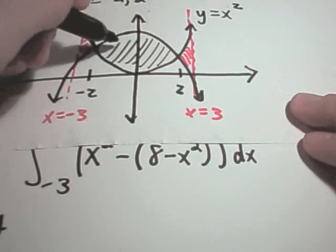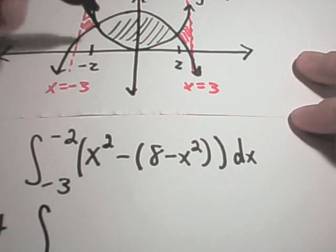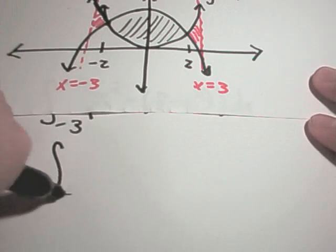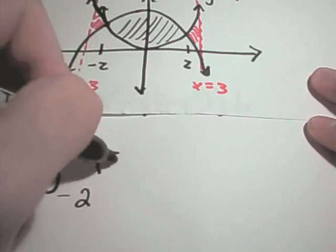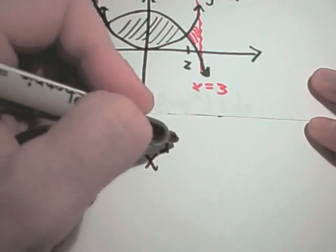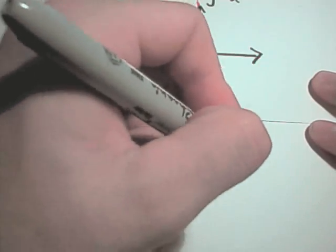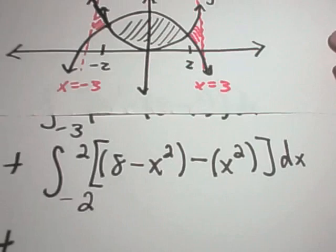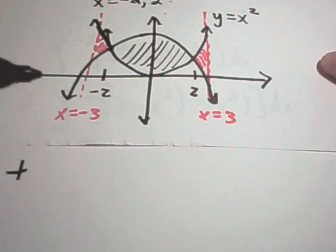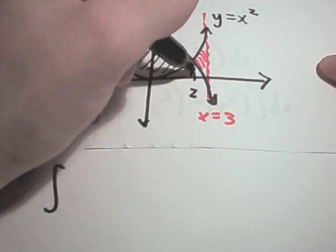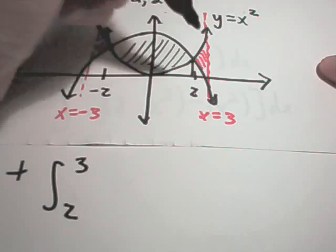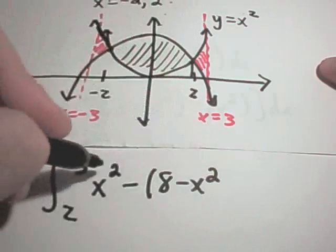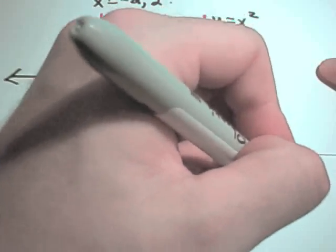So that's going to give us the first little region. We're going to have to add to that the area in the middle. And the area in the middle, well, the limits of integration are going to be from negative 2 to positive 2. So from negative 2 to positive 2. Again, now the curve on top is different. The bigger one is the 8 minus x squared curve. We'll subtract away the bottom curve, which is x squared. And then the last thing we'll have to do is add on the area of the right piece. And the area of the right piece. Now we're going to be integrating from the x coordinate of 2 to the x coordinate of 3. And again, now the curve on top is x squared. And the curve on the bottom is 8 minus x squared.